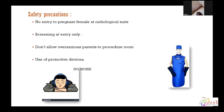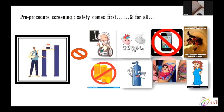Safety precautions. Safety is for all — doctors, technicians, patients, and relatives. No entry for pregnant females at the CT scan radiology suite. Screening should be done at entry only. Don't allow over-anxious parents into the procedure room. Use protective headphones for MRI and X-ray protective devices for CT scan. Patients with orthopedic implants or cardiac devices should not enter the MRI room. Ferromagnetic objects such as mobile phones, stretcher, coins, and oxygen cylinders are prohibited in the MRI suite. Pregnant females should not enter CT scan.